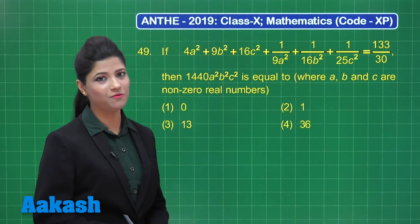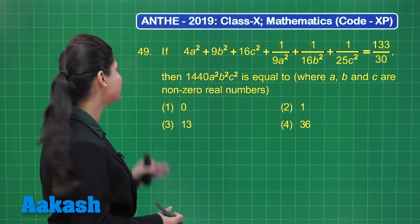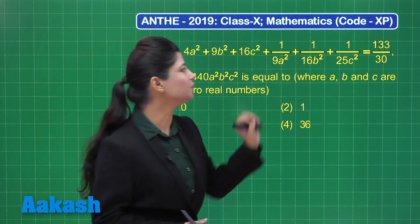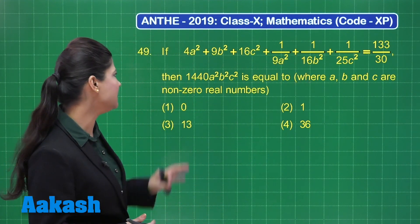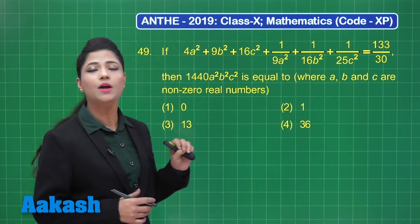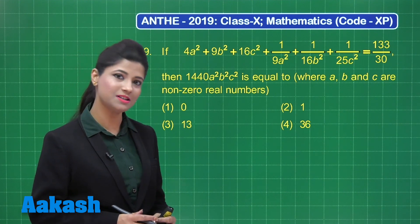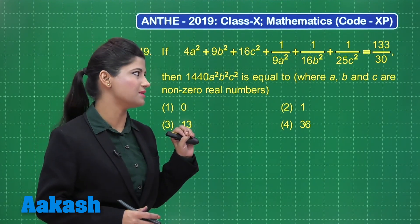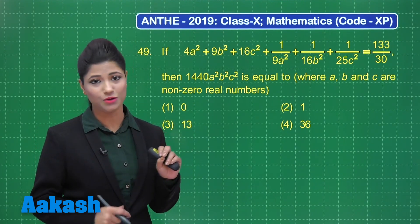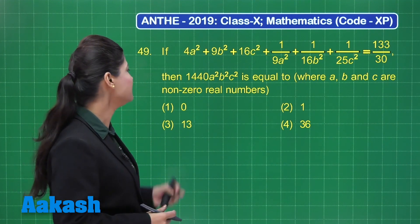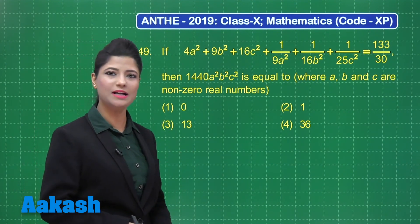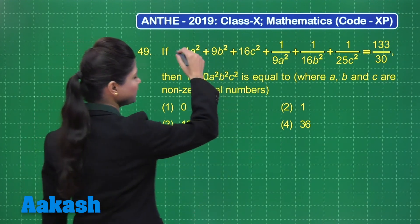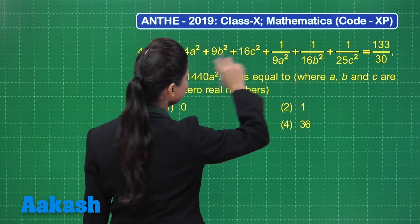Let's take question number 49. It states that if this expression is equal to 133 upon 30, then 1440a²b²c² is equal to which of these options, where a, b, and c are non-zero real numbers. Let's proceed with this question — you need to focus on the given equation on the left-hand side.